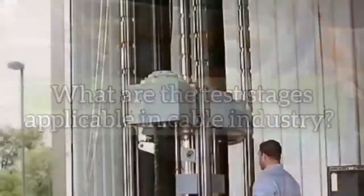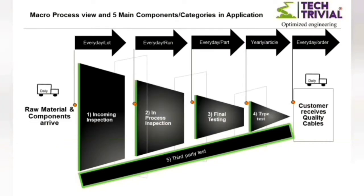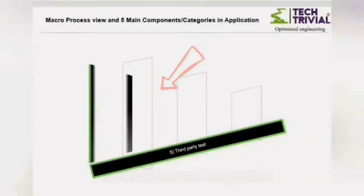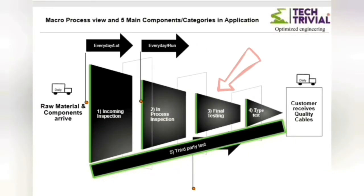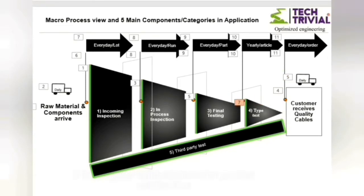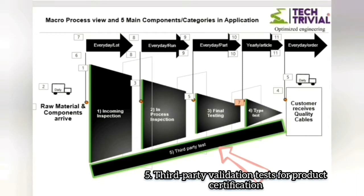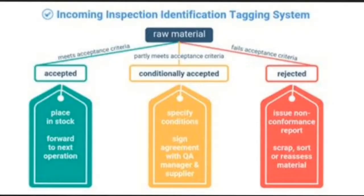What are the test stages applicable in cable industry? 1. Incoming inspection, 2. In-process inspection, 3. Final test and inspection, 4. Type tests on raw material, components, and finished goods, 5. Third-party validation tests for product certification.